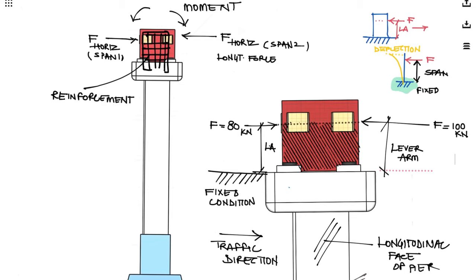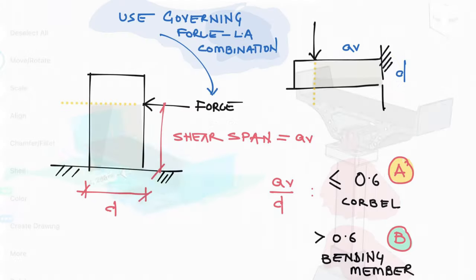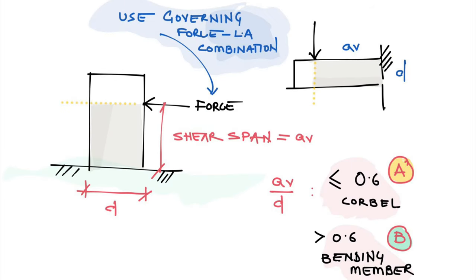The depth of the member is used as depth d. In order to know the type of design required for the structure, the ratio of shear span to the depth must be calculated. The member is designed as a corbel if the value of this ratio is less than 0.6. Otherwise, it is designed as a bending member as many other beams.